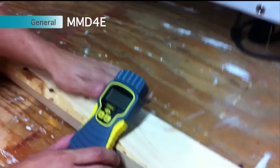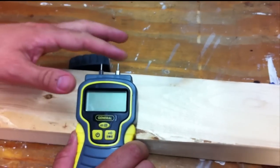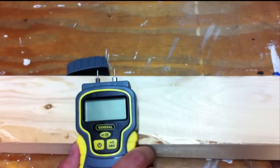Basically, it's a contact measurement tool, so it has these two little points on it that need to be in contact with the surface.